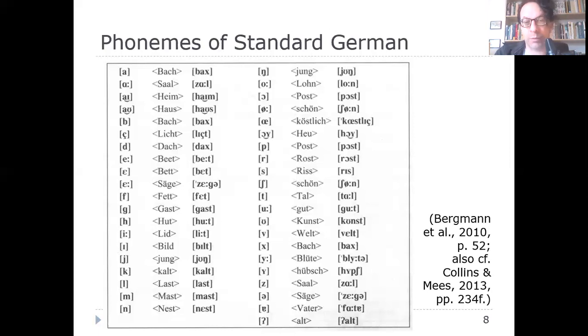There's also /ɔʏ/ as in Heu — though the transcription looks more like /ɔɪ/, the actual pronunciation has more of an /eː/-like sound at the end, not rounded. Then /p/ as in Post, and /r/ as in Rost — this sounds very different from English r, even though we use the same symbol; it's more of a fricative in German.